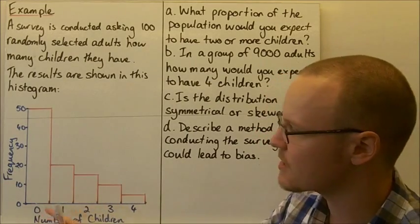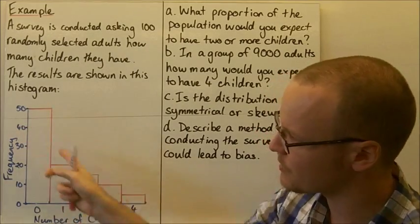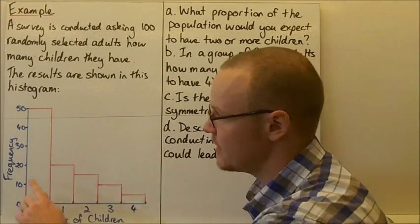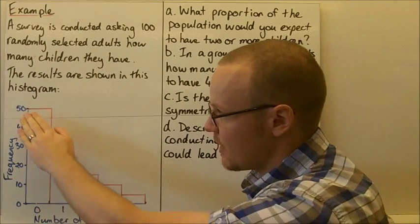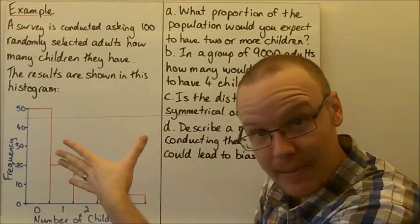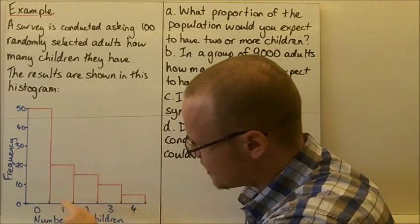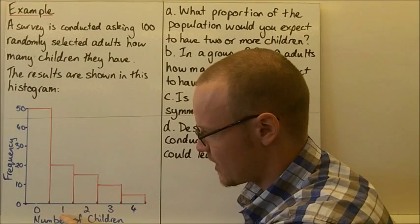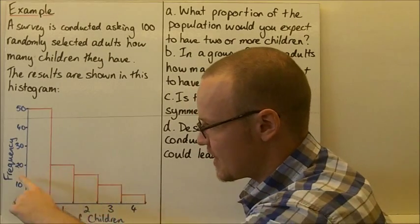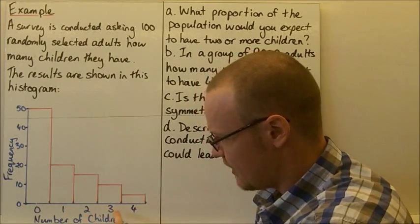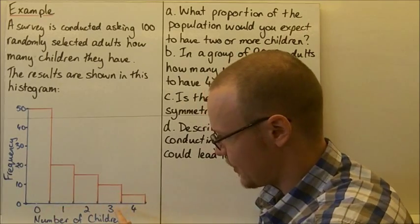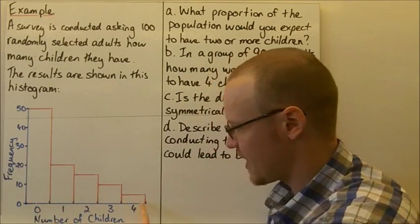4 is the maximum number of children that people said when they were surveyed and 0 is the minimum number. So we can see here that the frequency, it's the frequency of 0, so 50 out of people out of the 100, so half of the people said that they had no children. 20 people said that they had one child, 15 people said they had two children, 10 people said they had three children, and 5 people said they had four children.